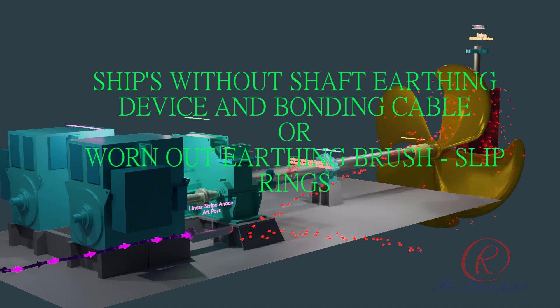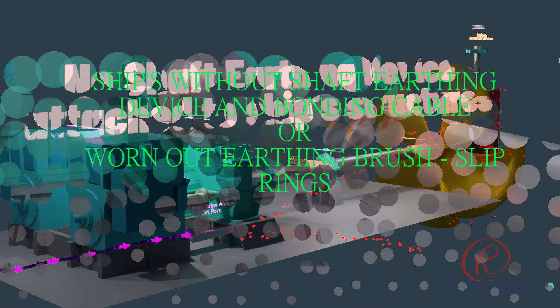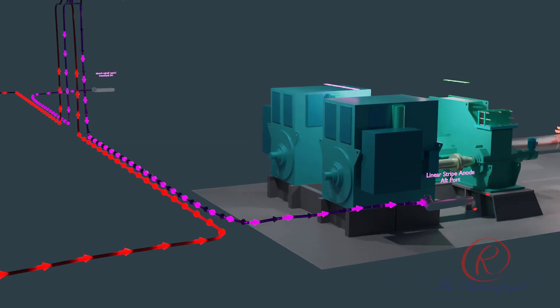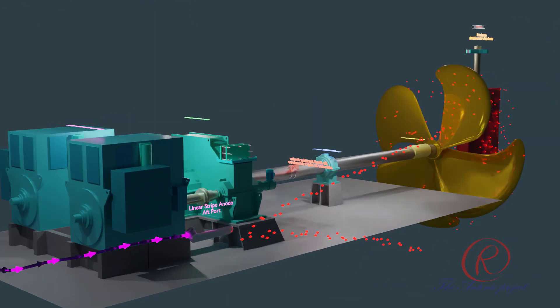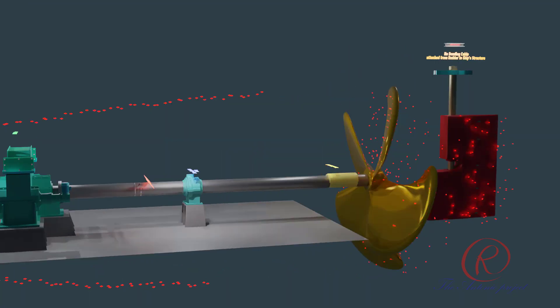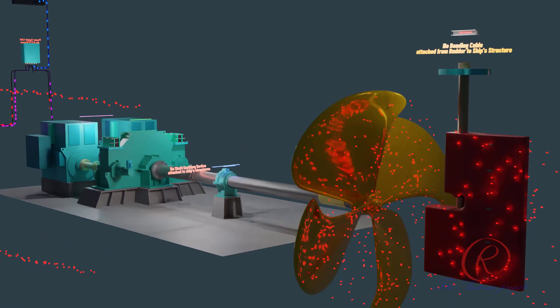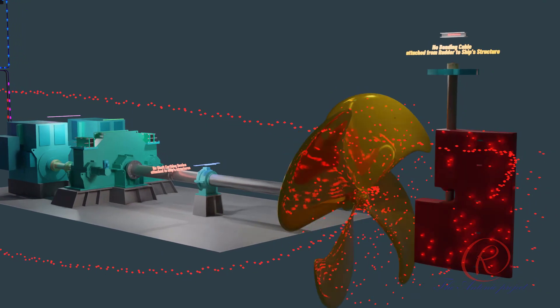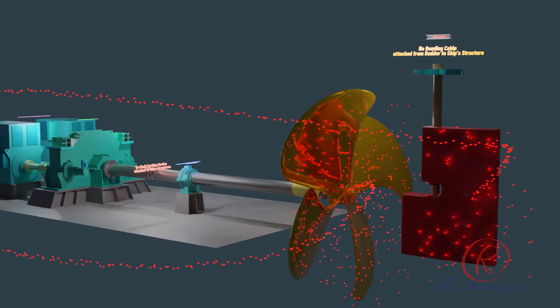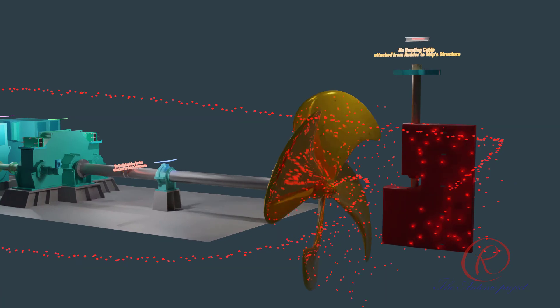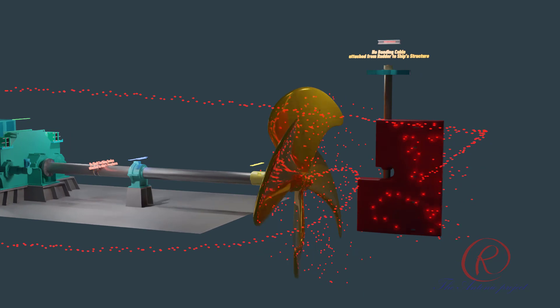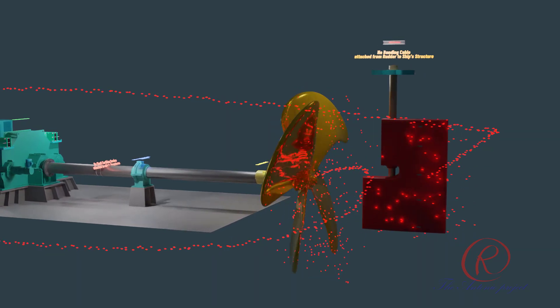Ships without shaft earthing device and bonding cable or worn out earthing brush slip rings. The following is the animation showing when a vessel did not install shaft earthing device or SED and bonding cable or worn out its silver brush. Without SED, the propeller and rudder acted as anodes that oxidized in the electrolyte or sea water and generating electrons. Also, rotating propeller generates a voltage potential difference between the shaft and the hull which in time will cause damage to the propeller and the bearings due to arc erosion.